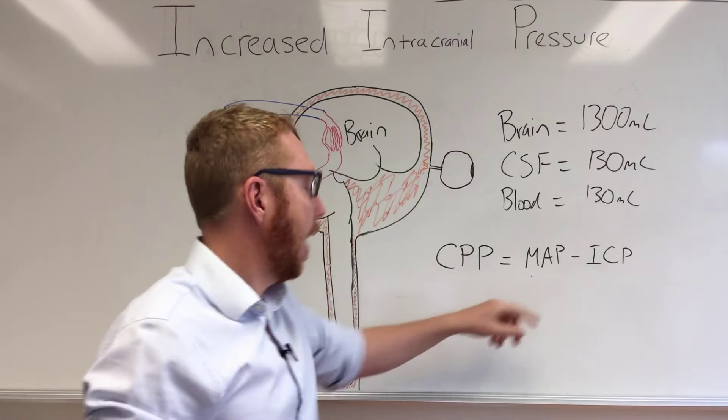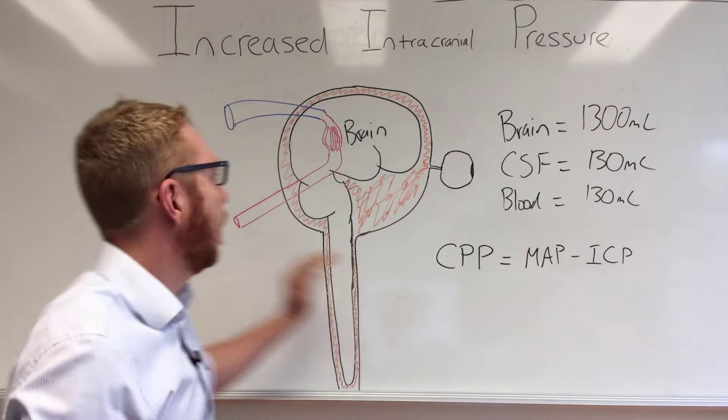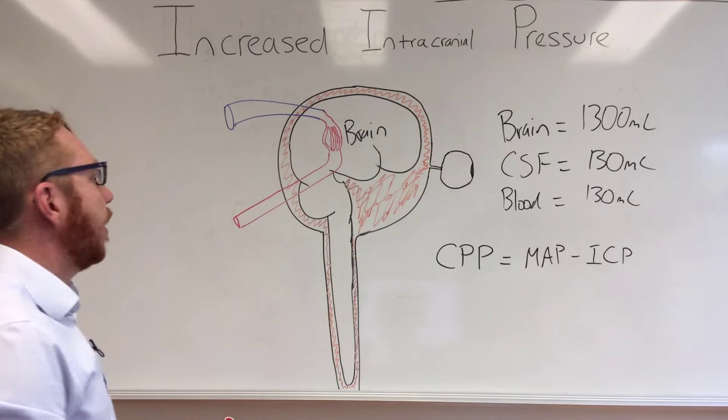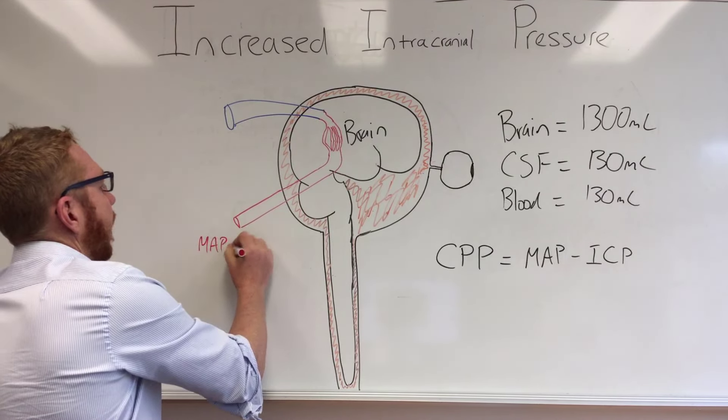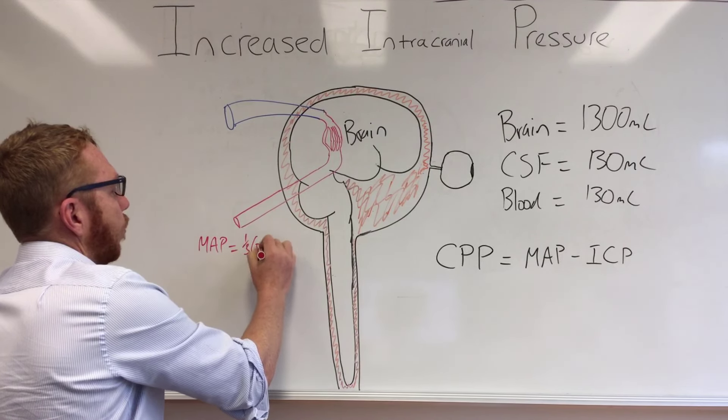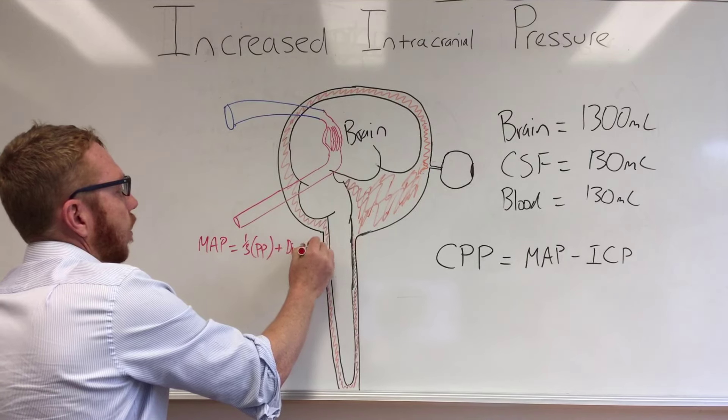When we look at MAP, this is the pressure, the mean arterial pressure that's coming into the brain. We know that the mean arterial pressure equals one third of the pulse pressure plus the diastolic pressure.